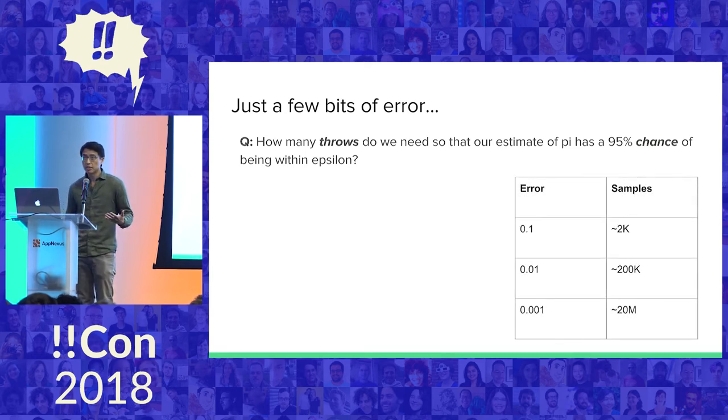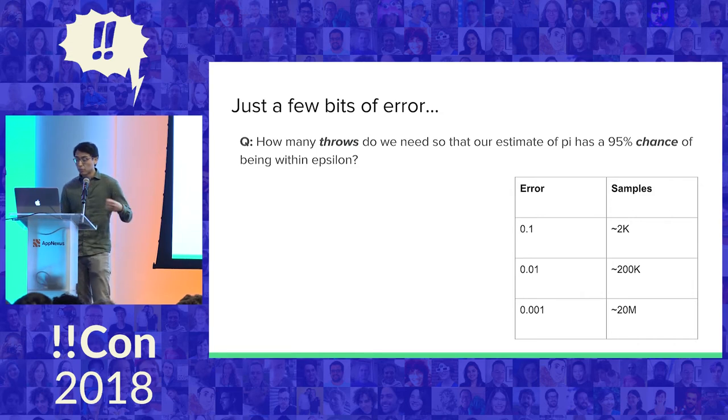Here's a table. You can compute this value to somewhat arbitrary precision. There's no nice closed form, but you can get pretty close on a computer. Roughly speaking, if the error is 0.1, I need about 2,000 throws. If the error is 0.01, I need around 200,000. If the error is 0.001, I need 20 million, which is quite a big number. The general trend is for every decimal place extra of error that I want to push down, I have to add two zeros to the number of samples. This isn't the most sample efficient algorithm, but it is an algorithm.